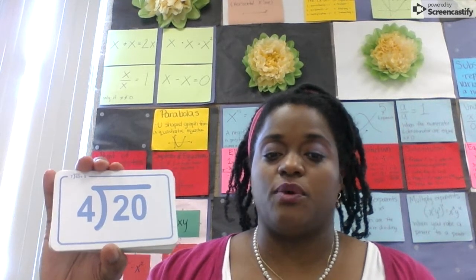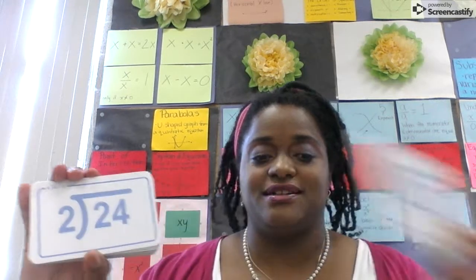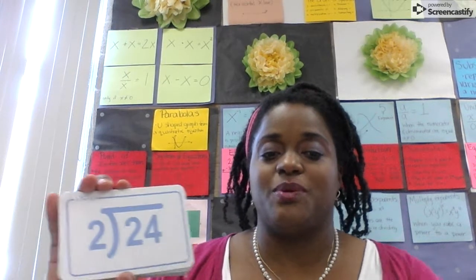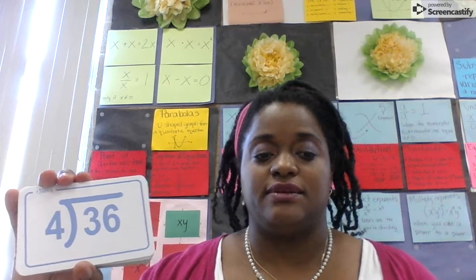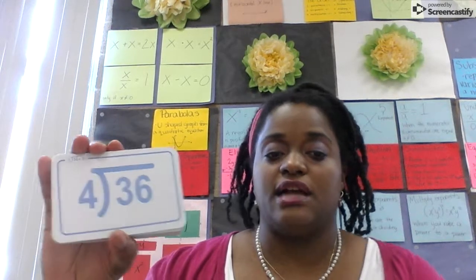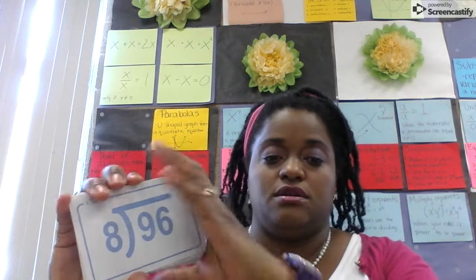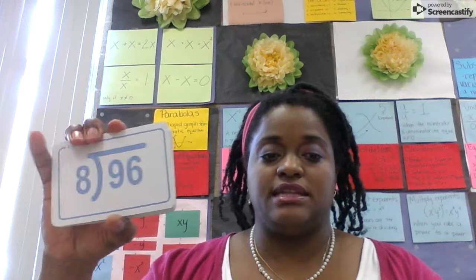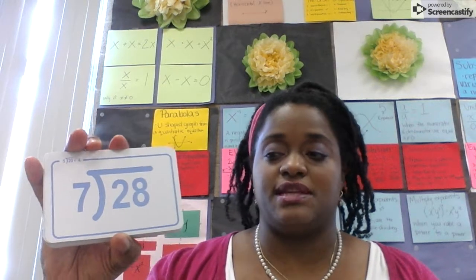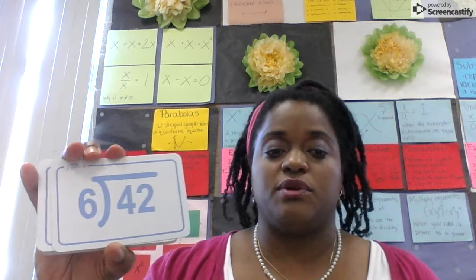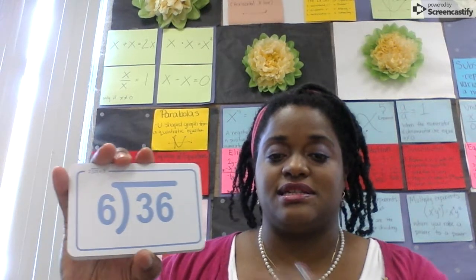20 divided by 4 is 5. 22 divided by 2 is 11. 24 divided by 2 is 12. 72 divided by 8 is 9. 36 divided by 4 is 9. 96 divided by 8 is 12. 28 divided by 7 is 4. 42 divided by 6 is 7. 36 divided by 6 is 6.